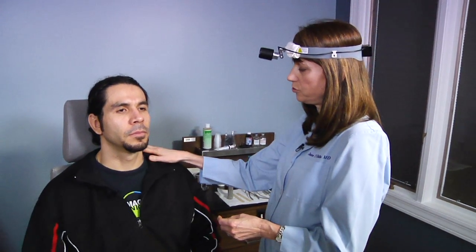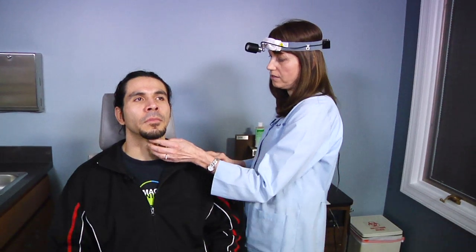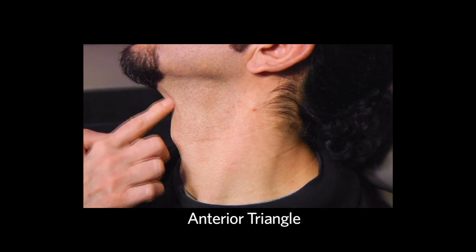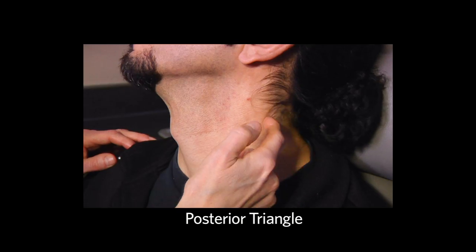The neck exam may be done from the front or behind the patient — the latter is often preferable to feel the thyroid. In patients with a large neck, the exam may be completed in any sequence, but you should develop your own routine. The neck has two major triangles: anterior and posterior.